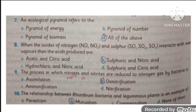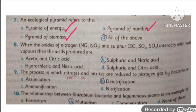MCQ number seven: an ecological pyramid refers to the pyramid of energy, pyramid of biomass, and pyramid of numbers. So all of the options are correct, and the correct option is all of these.